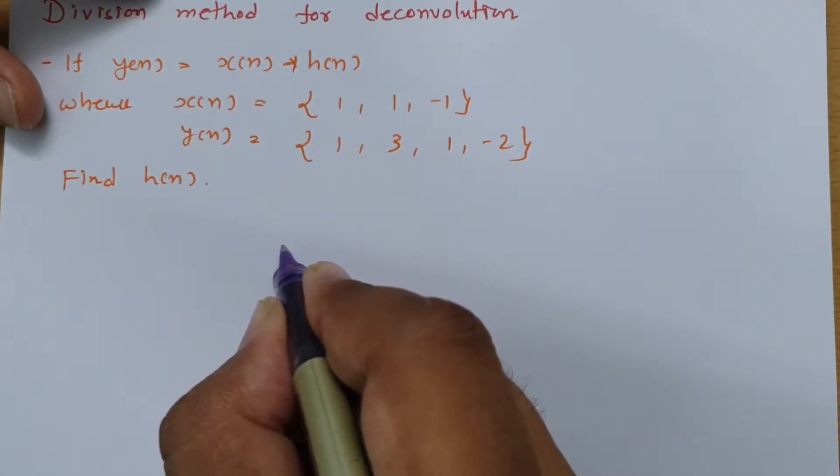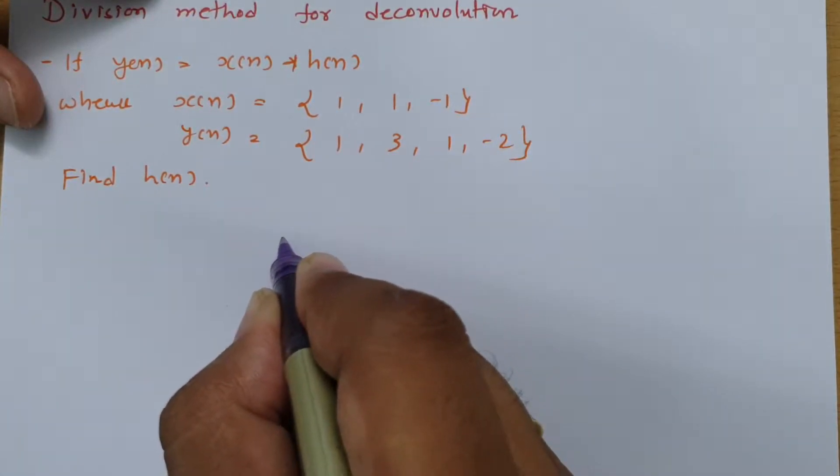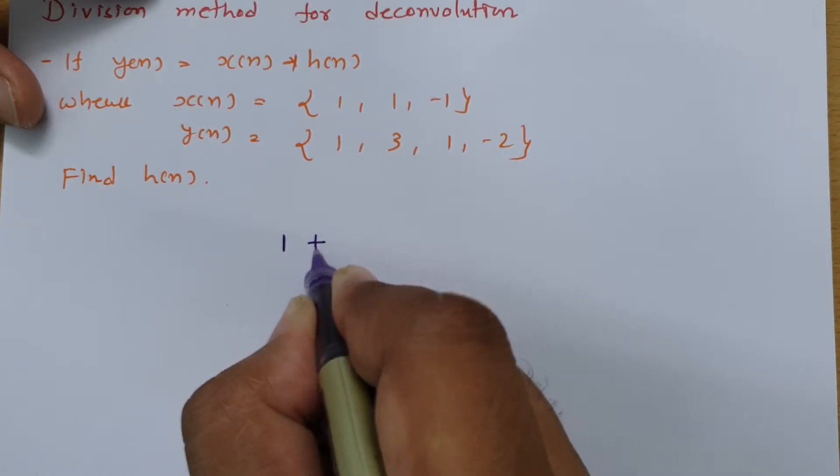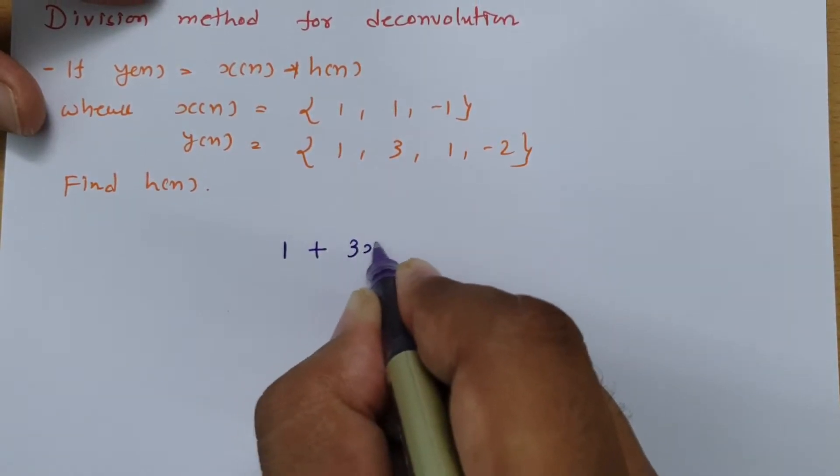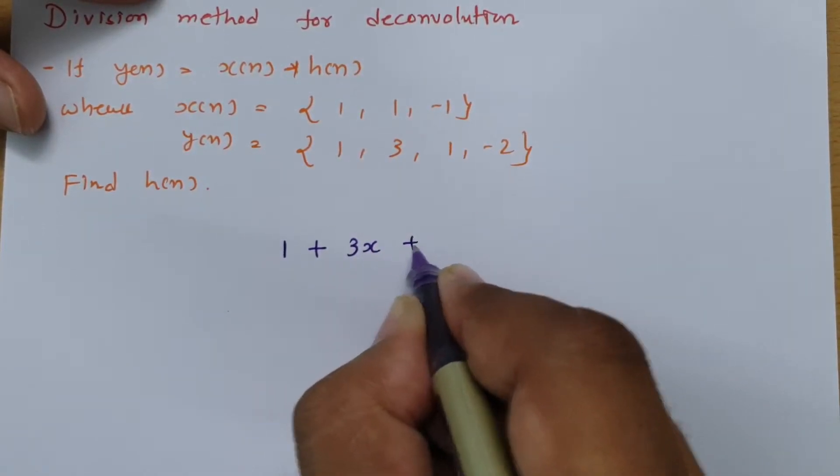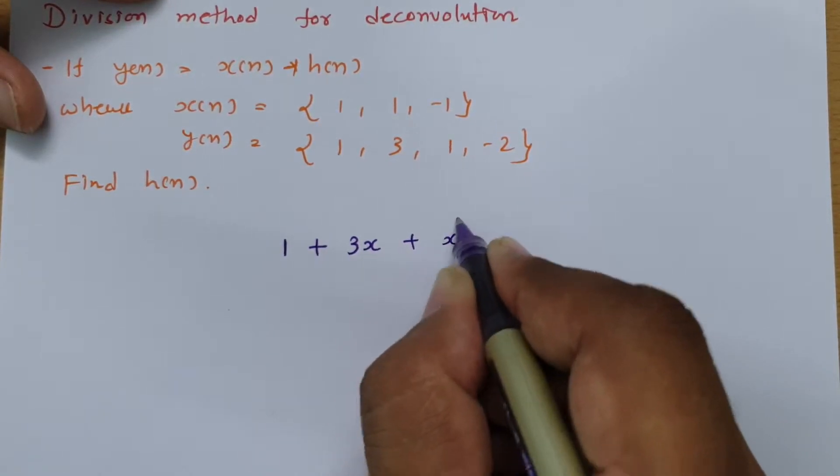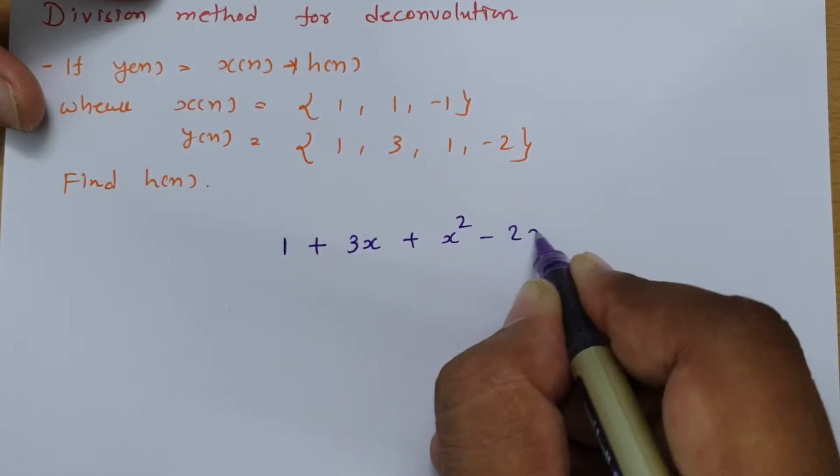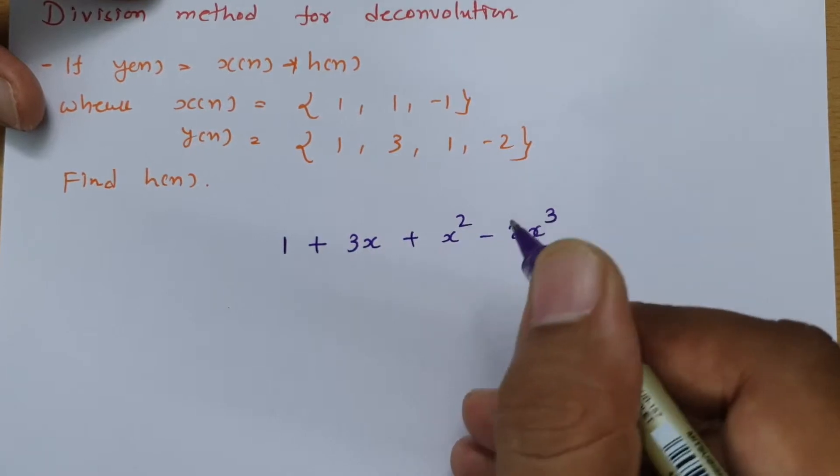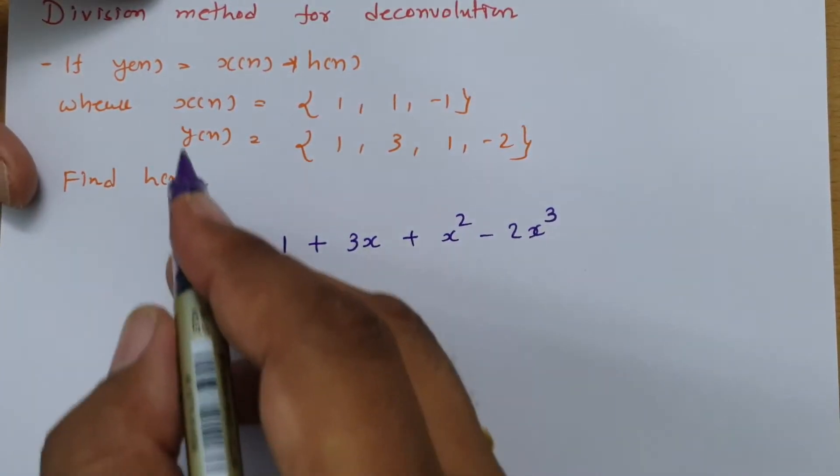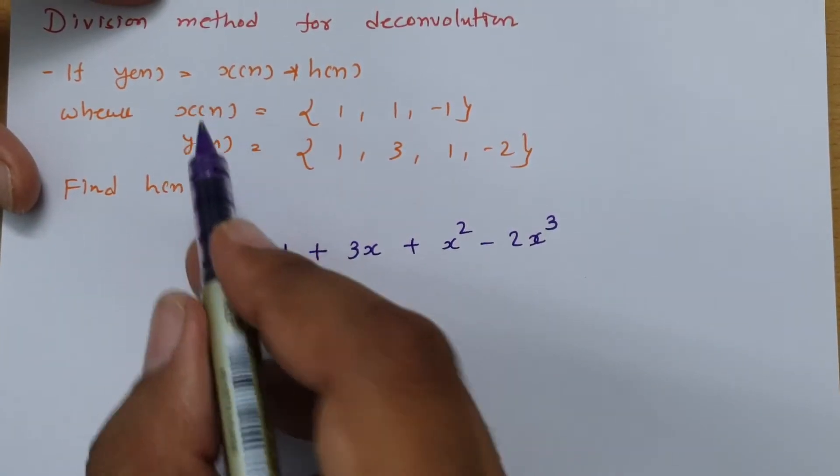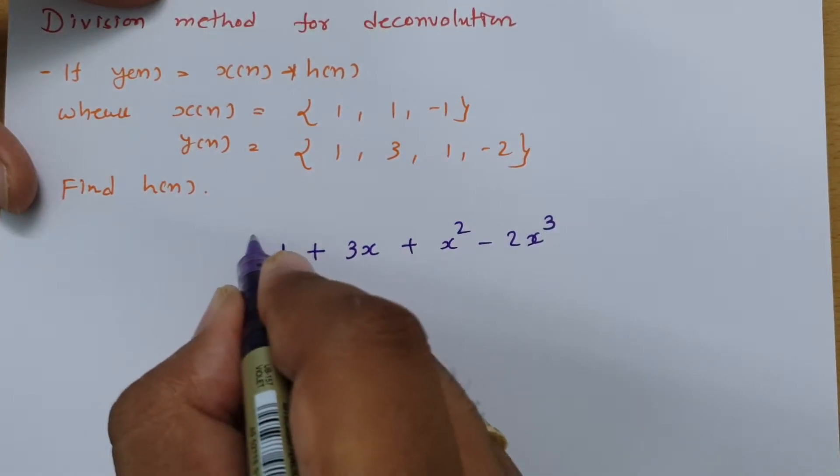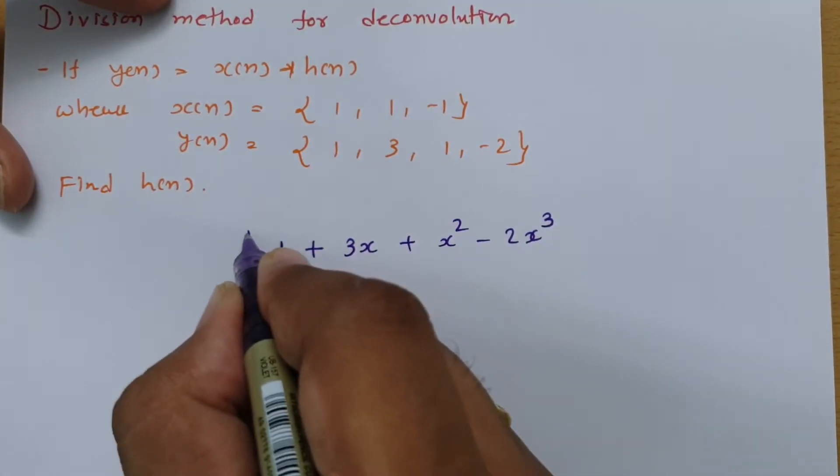y(n) is written as 1 + 3x + x² - 2x³, and that is what we need to divide by x(n).